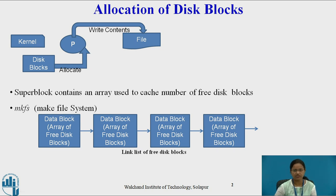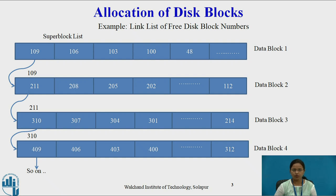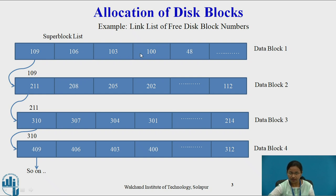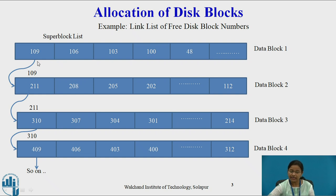Consider this is a super block list which contains a total of four data blocks. Data block one contains an array of free disk block numbers. One entry from that array points to the next data block, which again contains free disk blocks. In this way, the free disk blocks are arranged in an array along with a linked list, where one entry from that array points to the next disk block. This is the structure of the free disk blocks present in the super block list.